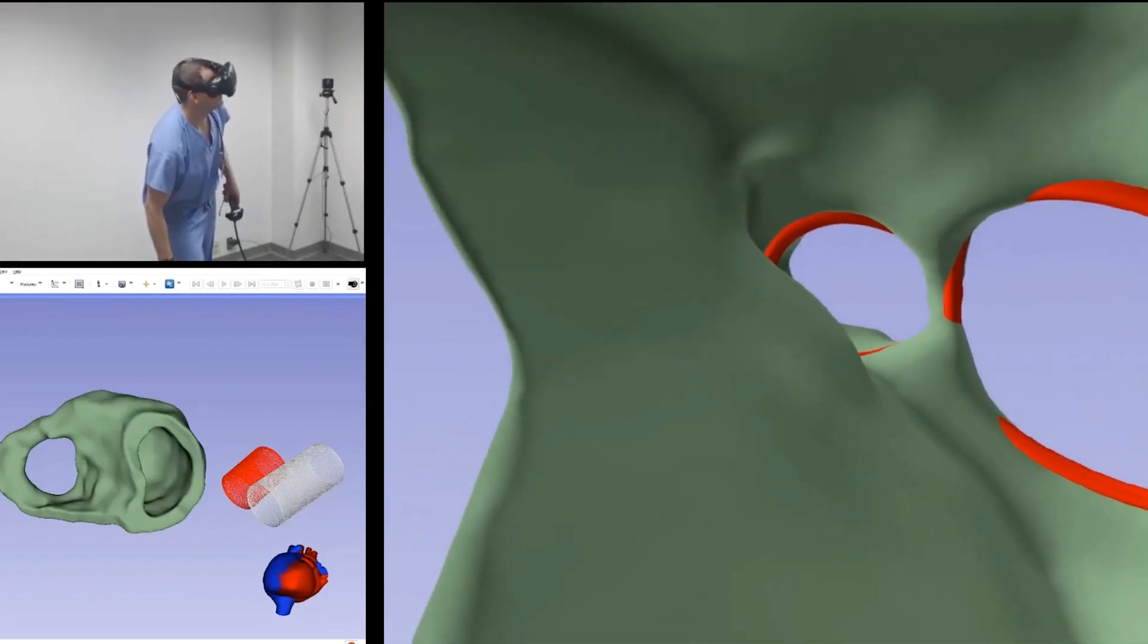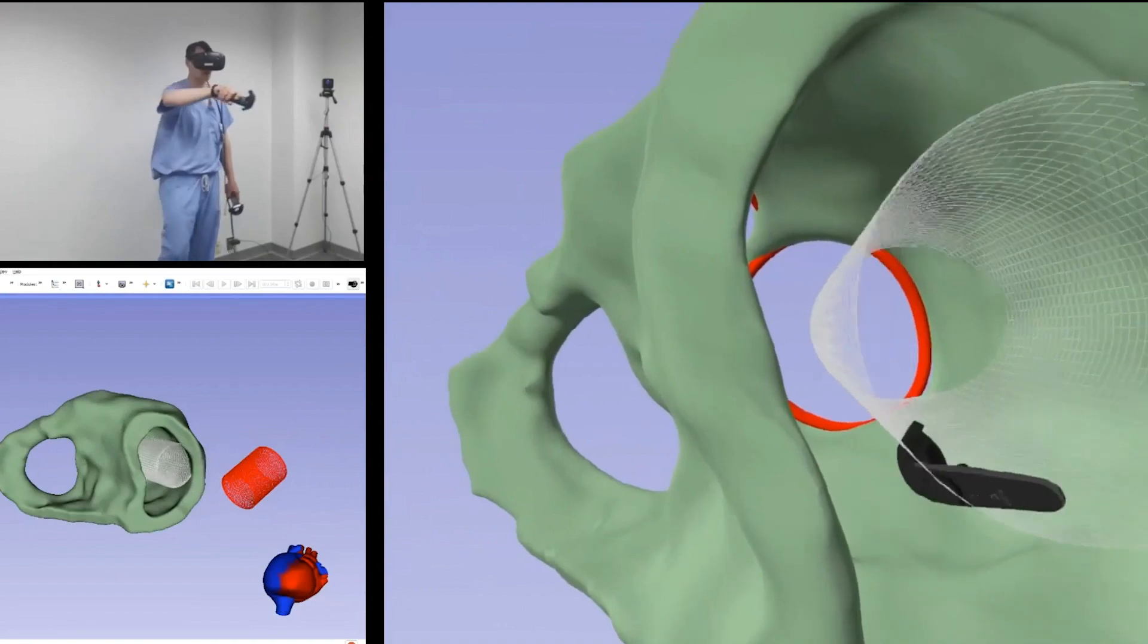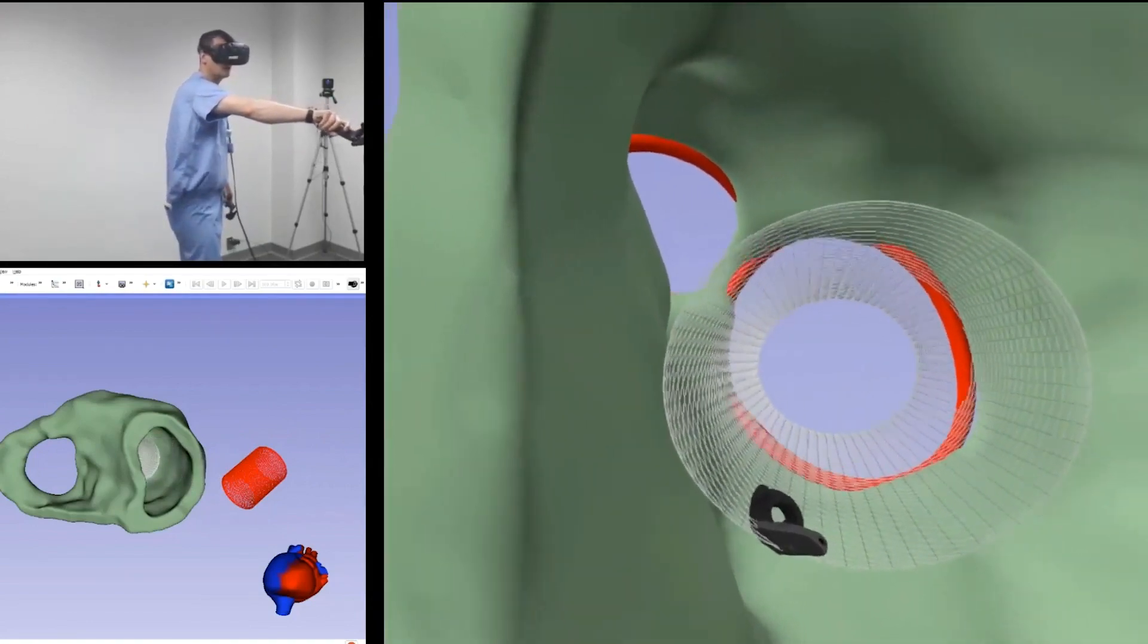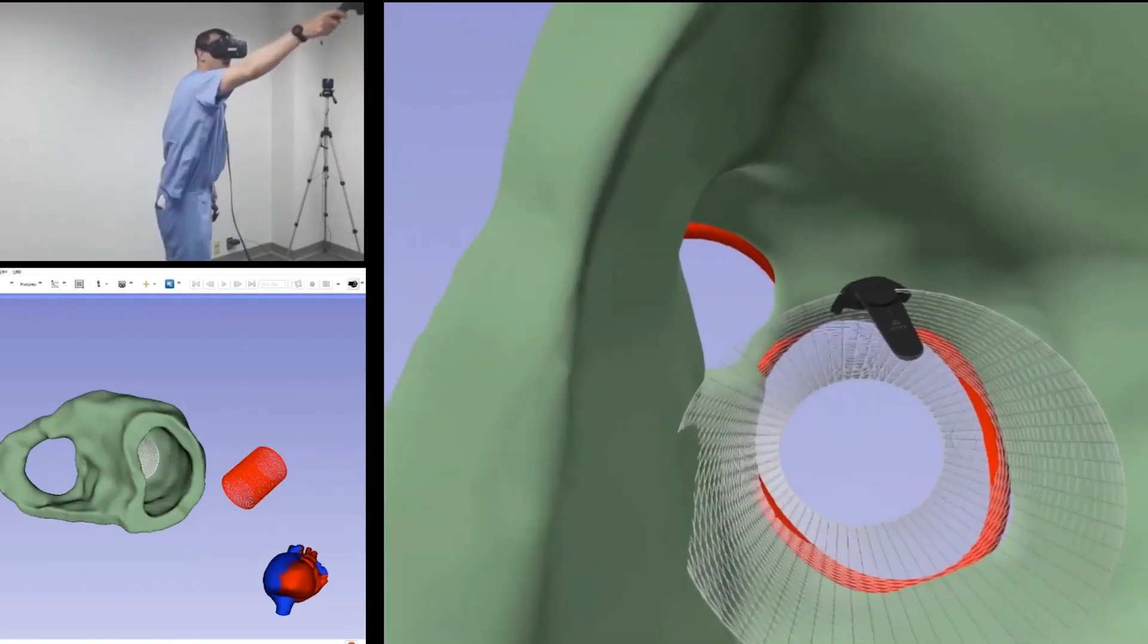Here, two devices are placed in different orientations to assess fit and the potential for LVOT obstruction. We first place a long device, roughly orthogonal to the mitral annulus.